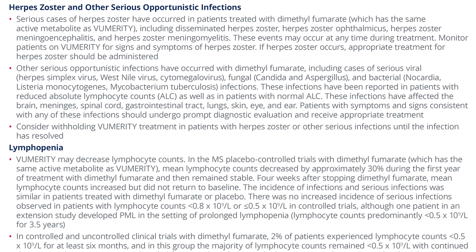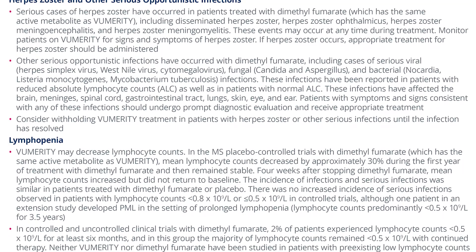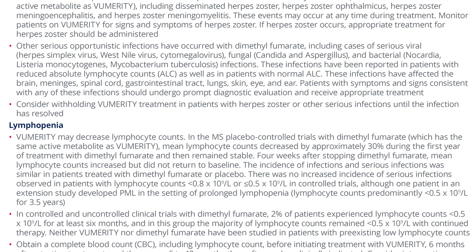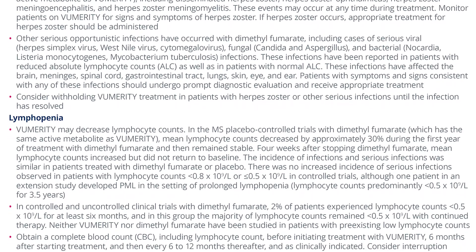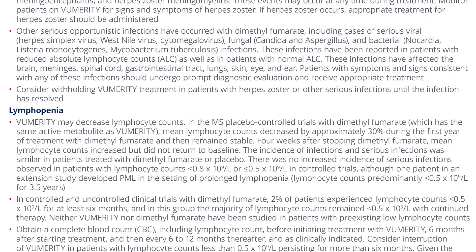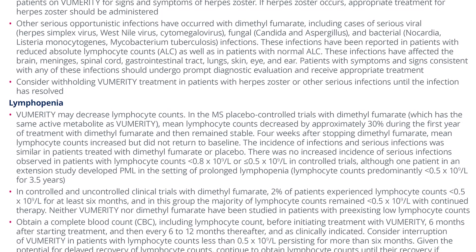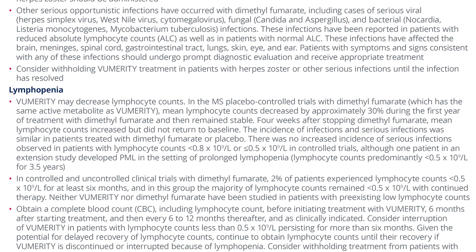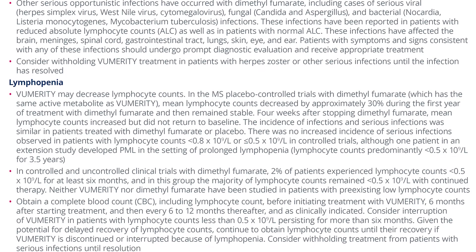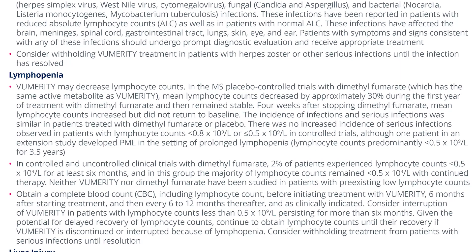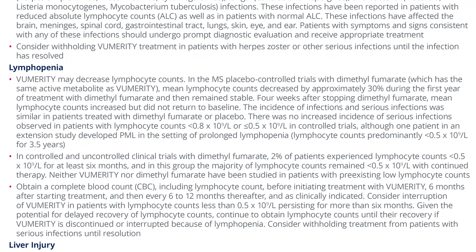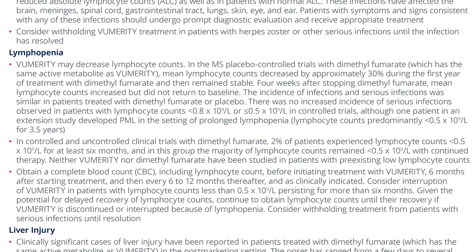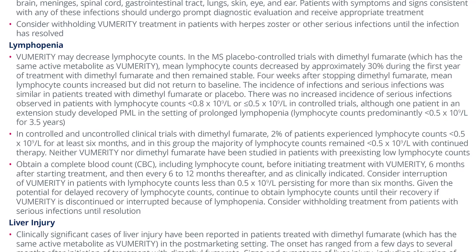Lymphopenia: Vumerity may decrease lymphocyte counts. In MS placebo-controlled trials with dimethyl fumarate, mean lymphocyte counts decreased by approximately 30% during the first year of treatment and then remained stable. Four weeks after stopping dimethyl fumarate, mean lymphocyte counts increased but did not return to baseline. The incidence of infections and serious infections was similar in patients treated with dimethyl fumarate or placebo. There was no increased incidence of serious infections in patients with lymphocyte counts less than 0.8 × 10⁹ per liter or ≤0.5 × 10⁹ per liter in controlled trials, although one patient in an extension study developed PML in the setting of prolonged lymphopenia with counts predominantly less than 0.5 × 10⁹ per liter for 3.5 years.